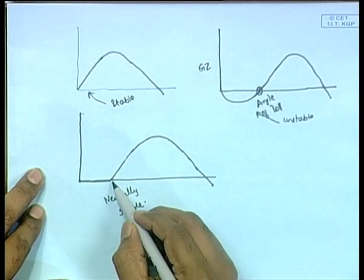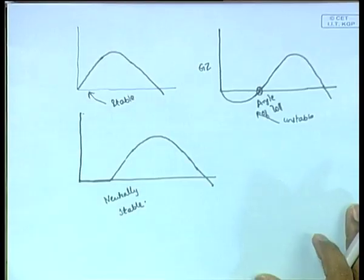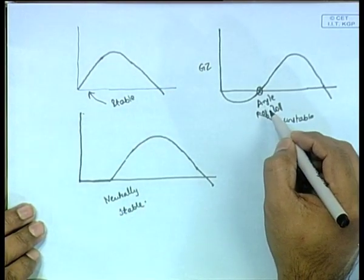The moment the ship reaches this angle, from there on it is stable. After that angle it comes back, but in this neutral case it is not going to one fixed angle. If a small heel occurs and then stops, it might remain there. If the wind keeps pushing, it will heel further. These are three cases of GZ curves: one is stable, one has an angle of loll, and the third is neutrally stable.